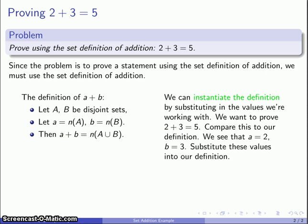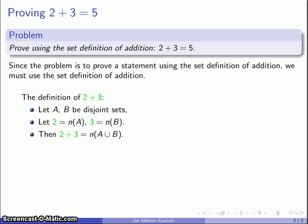We'll work our way a little bit backwards here. So I want to define what 2 plus 3 is. I'll take two disjoint sets: 2 is the cardinality of one, 3 is the cardinality of the other, and 2 plus 3 is the cardinality of their union.